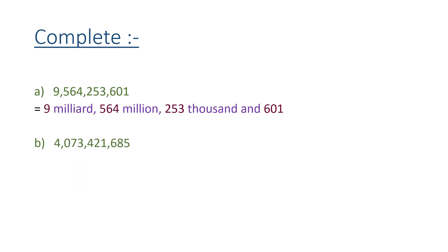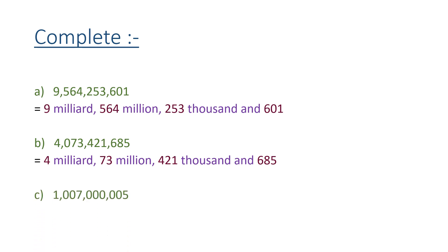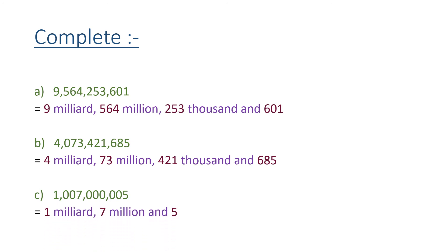Another example: 4,073,421,685. Four is in the milliard family, 073 is in the million family, 421 is in the thousand family, and 685 is the last group. Another number: 1,007,000,005 — one is in the milliard family, 007 is in the million family, 000 in the thousands, and 5 in the ones.